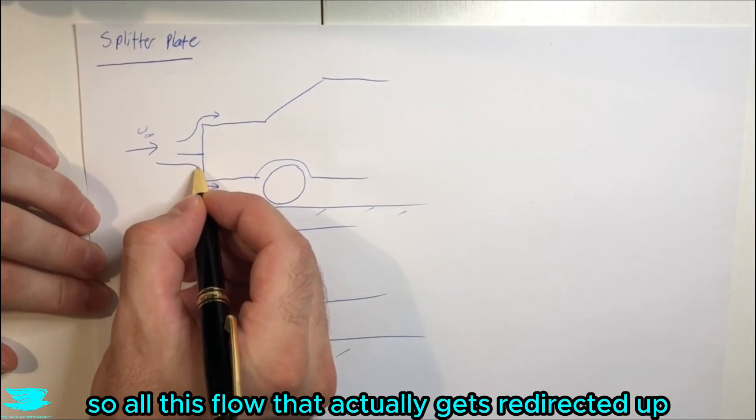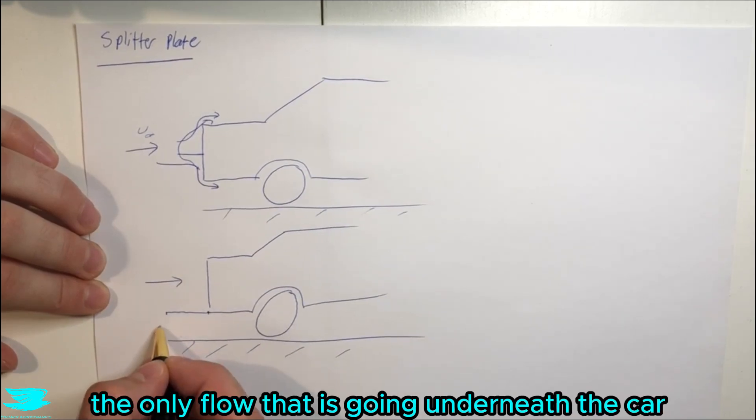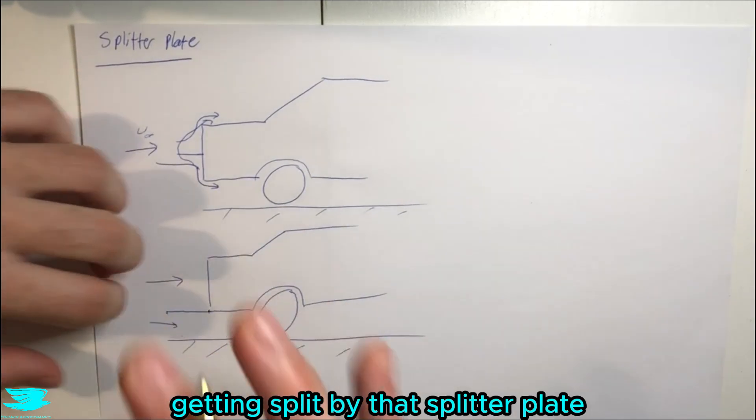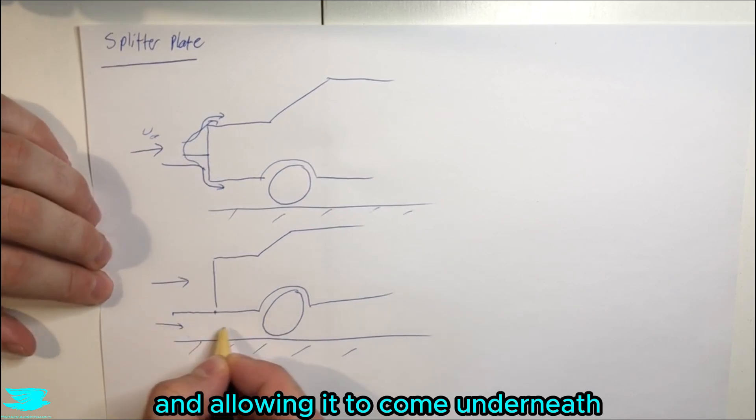So all this flow actually gets redirected up as well. As such, the only flow that is going underneath the car is the part that is already getting split by that splitter plate and allowing it to come underneath.